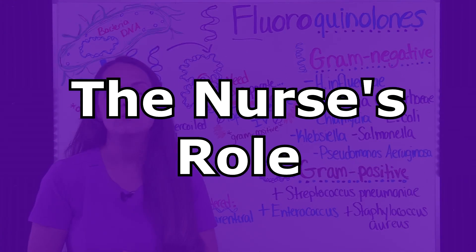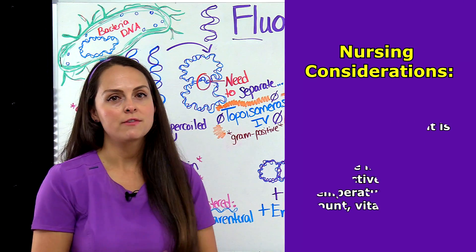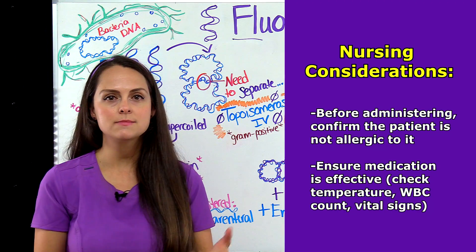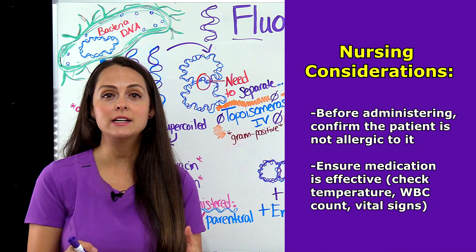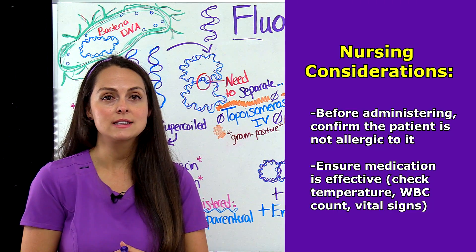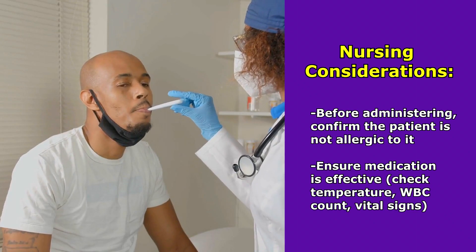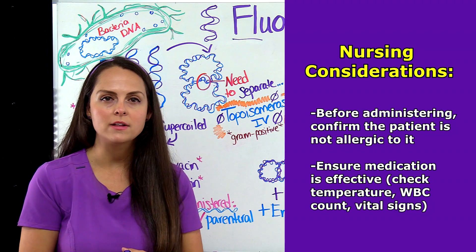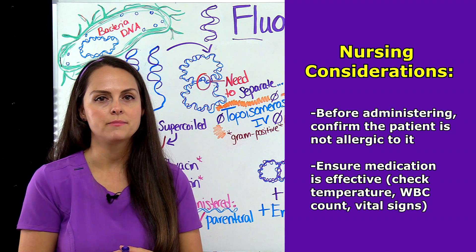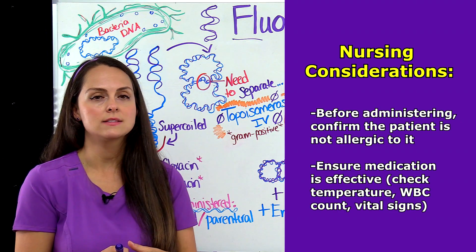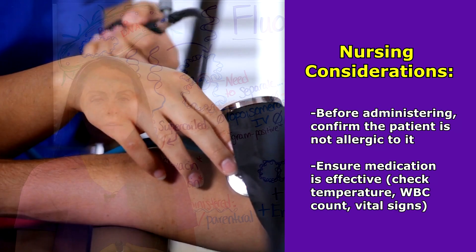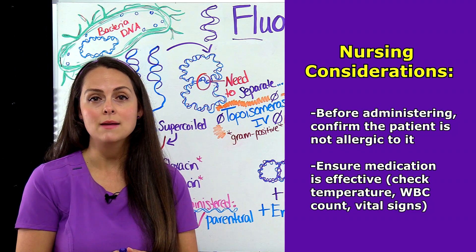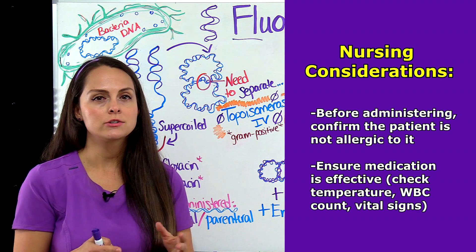Now let's talk about the nurse's role for administering quinolones. Before you administer, confirm your patient is not allergic to this medication. During administration, make sure the medication is being effective — monitor the patient's temperature, white blood cell count (normal is 5,000–10,000), vital signs, blood pressure, heart rate, mental status, and breathing. All of these could indicate that your patient may be experiencing septic shock.